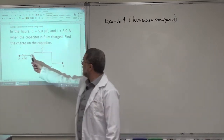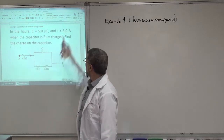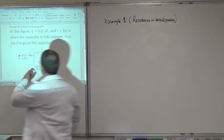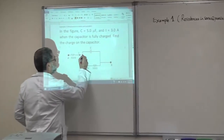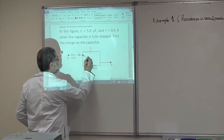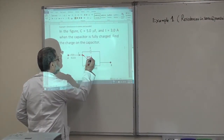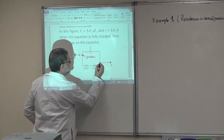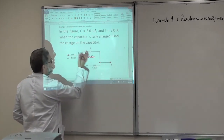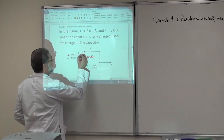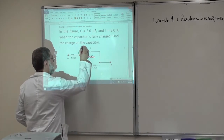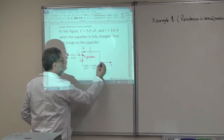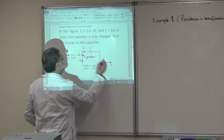I have a current I, and that current is three amperes. When the current comes to this point, this is called the junction. At the junction, it separates into two currents, I1 and I2, and then they join again here for the total current I.